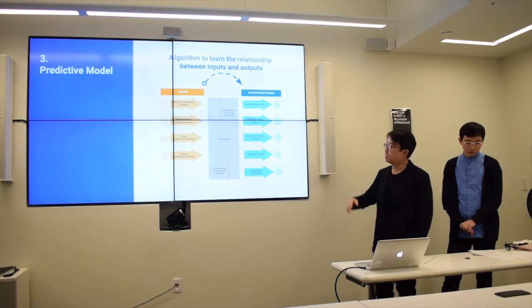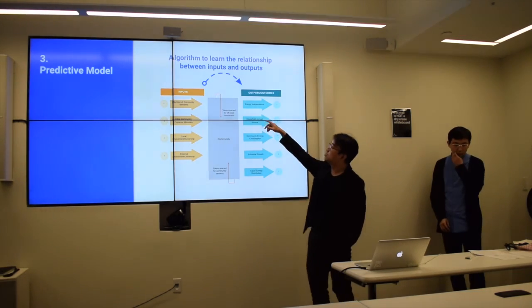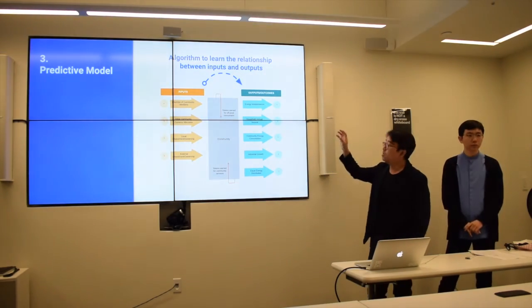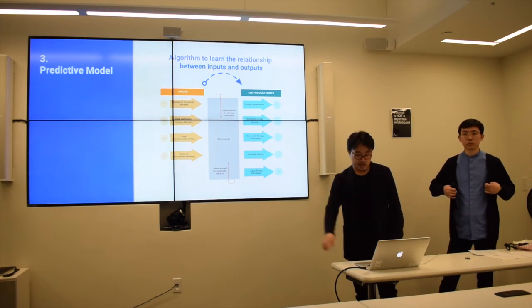With the data we have, we can further, now we know what's the number in input and what will happen on output. So we can further use the machine learning algorithm to learn the relationship between them.